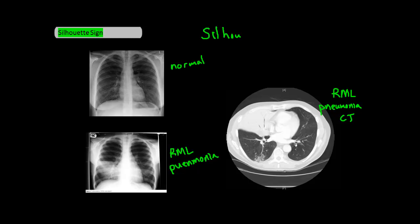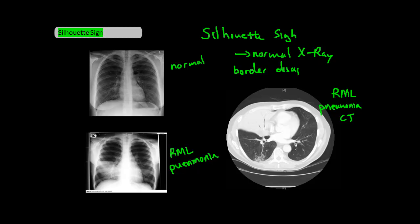The silhouette sign is when a border that you would normally expect to see on an X-ray disappears. One example is the right heart border. This is important because it's a signal that there must be some sort of pathology, and can also help you determine the location of the pathology. To make sense of this concept, let's look at a right middle lobe pneumonia.